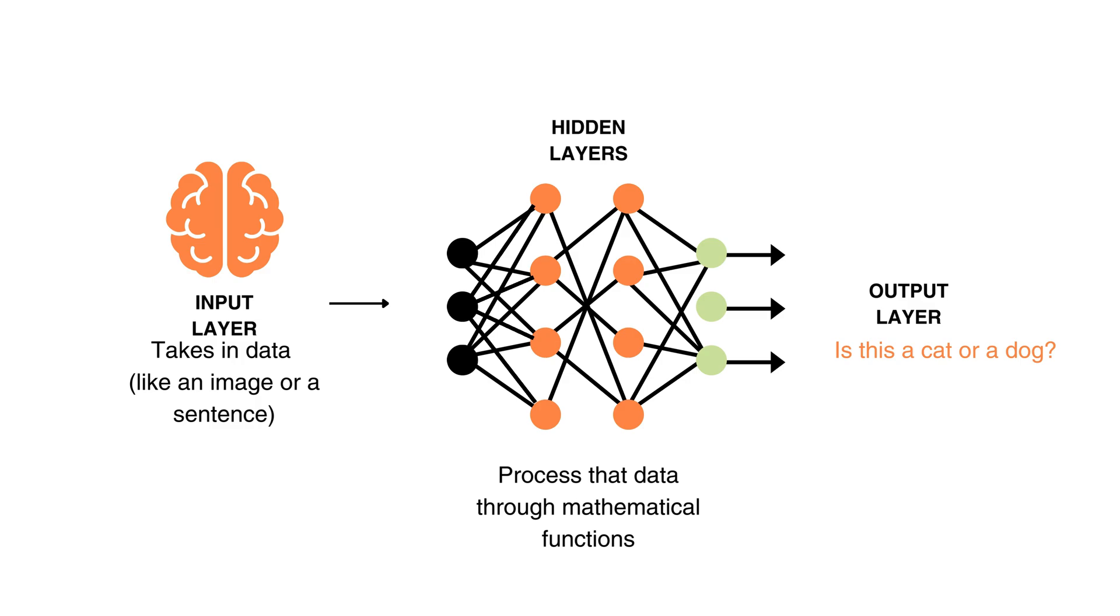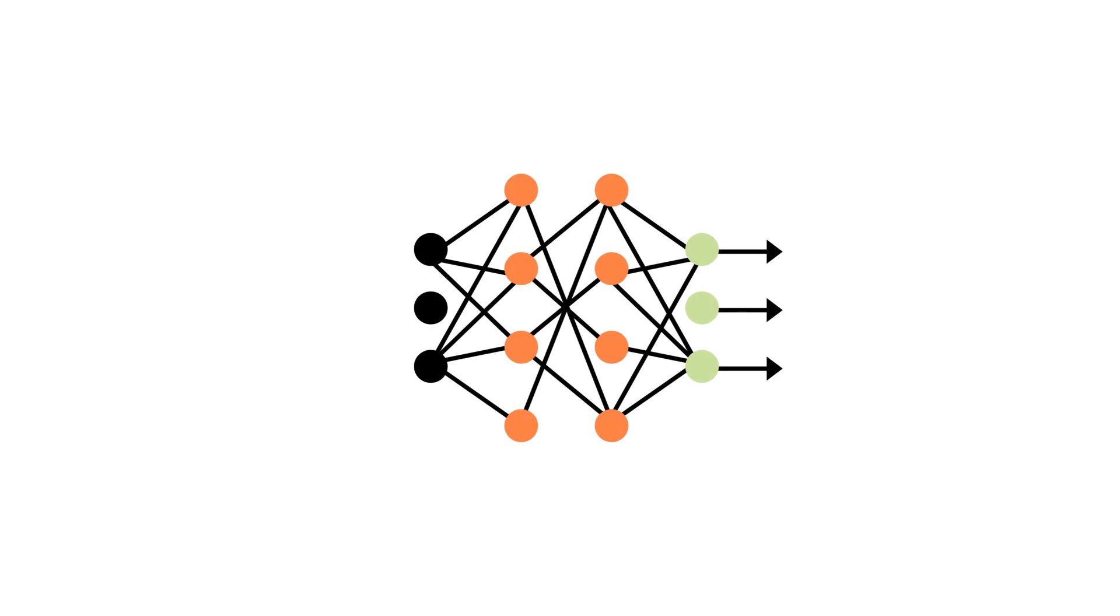Each connection between neurons has a weight, a number that determines how much influence one neuron has on another. What is the goal of the network? The goal is to learn the right weights so that it makes accurate predictions. But how does it learn? That's where backpropagation comes in.